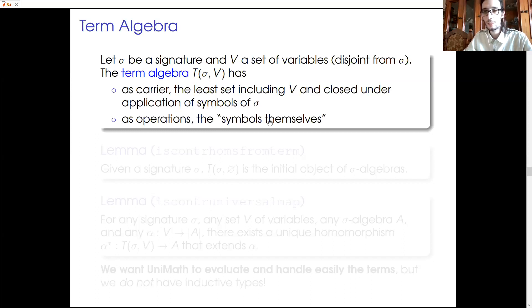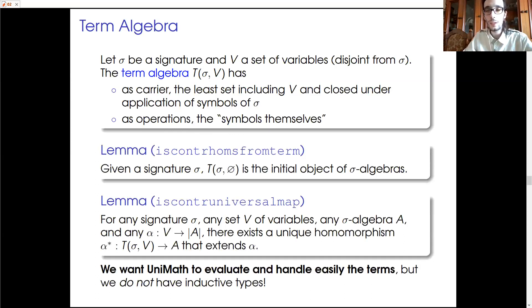So, symbols interpret themselves as operations. And also, we have been able to prove that for any set of variables, the term algebra over V is the free algebra over V and in particular that the term algebra over the empty set is the initial object in the category of σ-algebras. So, to prove this result, we only need to prove that the types you may guess are contractible and we can prove that because we can reason by induction on terms even though we do not have inductive types.